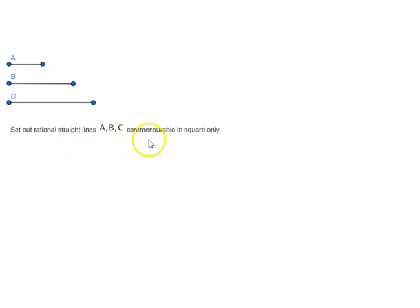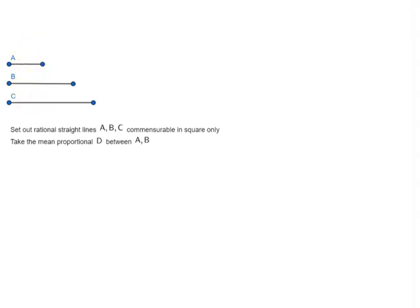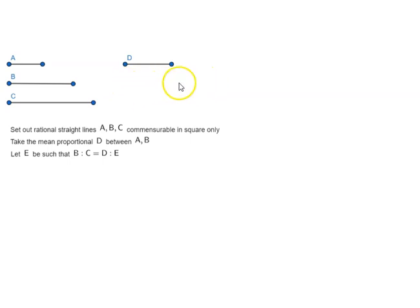Set out rational straight lines A, B, C commensurable in square only. Take the mean proportional D between A and B. Let me bring in D. Let E be such that B is to C is equal to D is to E. We have to find E such that this proportion holds, and we know how to do that.